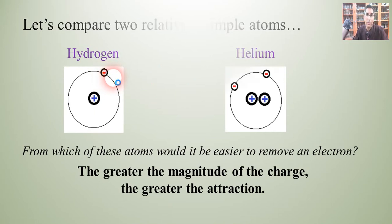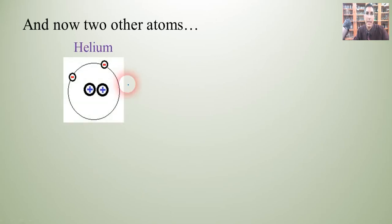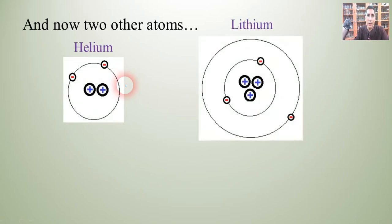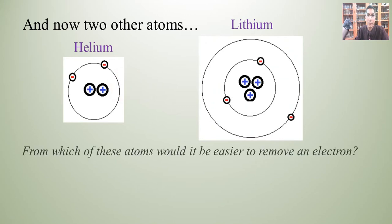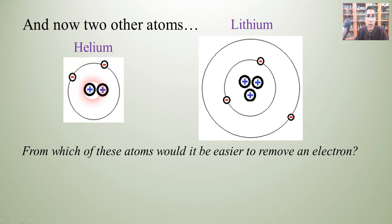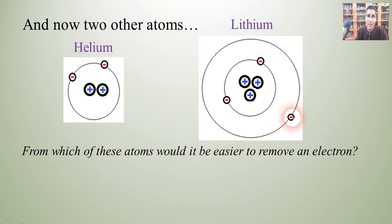Now let's take a look at another example. We have two other atoms — we're going to take helium, but this time we're going to compare it to lithium. My question is: from which of these atoms would it be easier to remove an electron? We see that helium has two protons in its nucleus. Lithium has three protons in its nucleus. But notice we have something else thrown in here — we've added a second energy level to lithium.